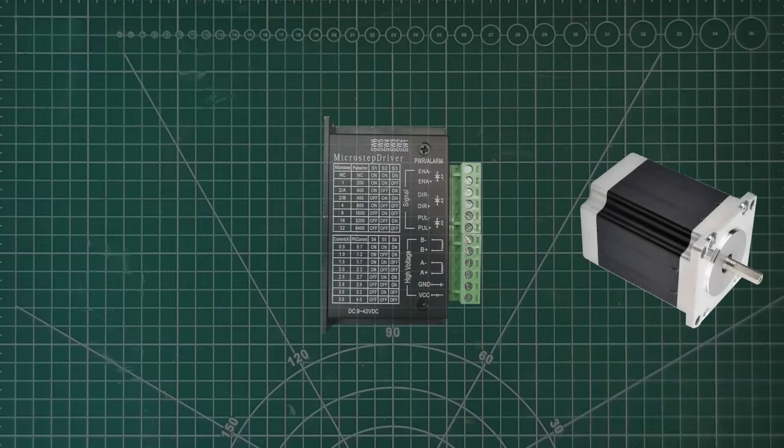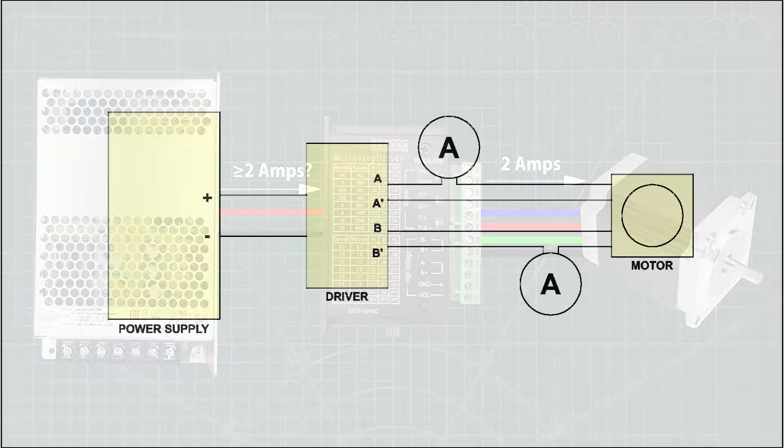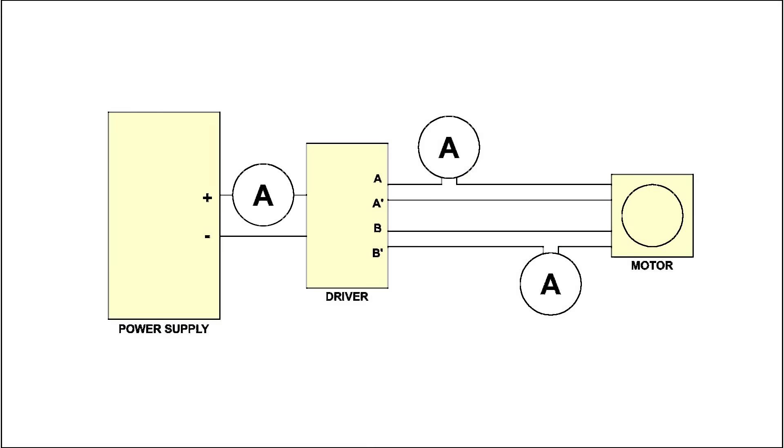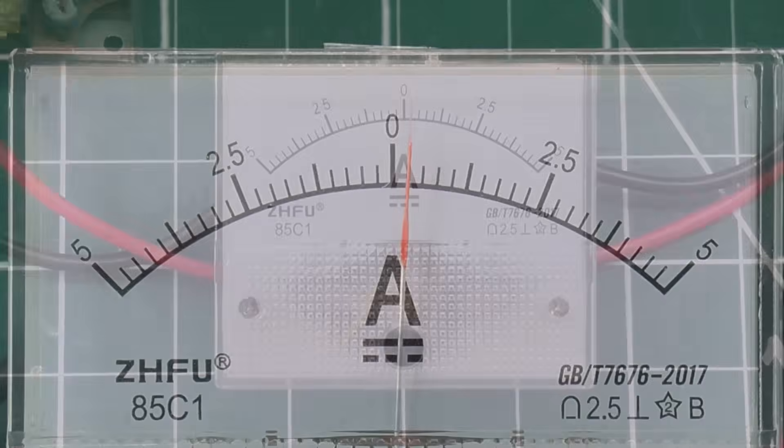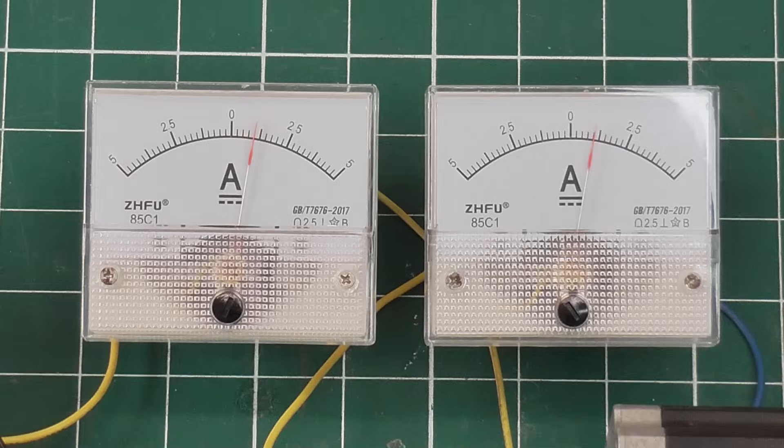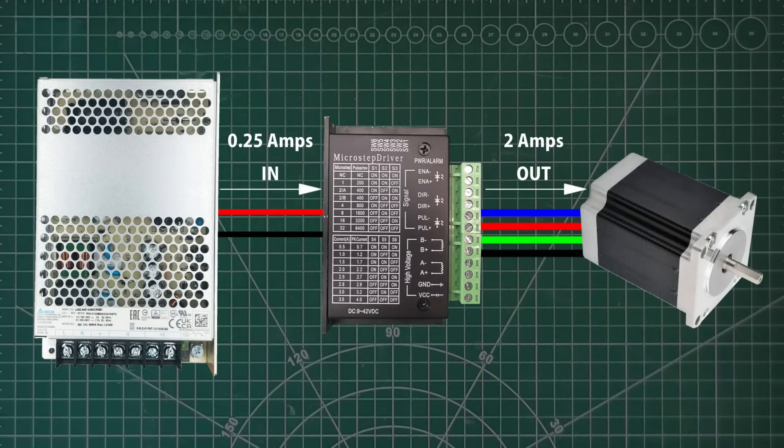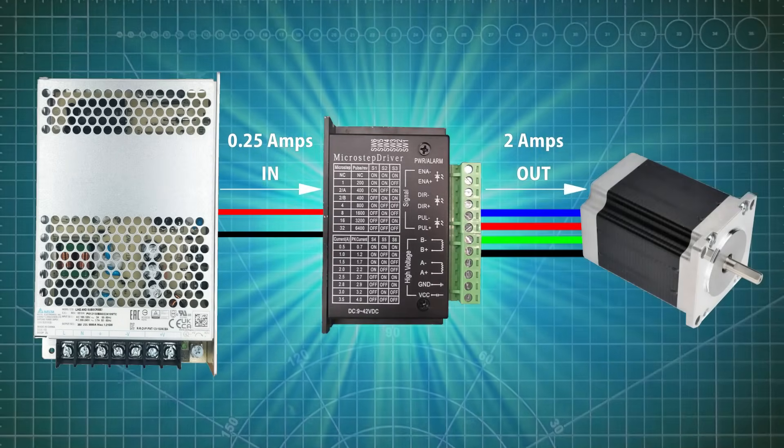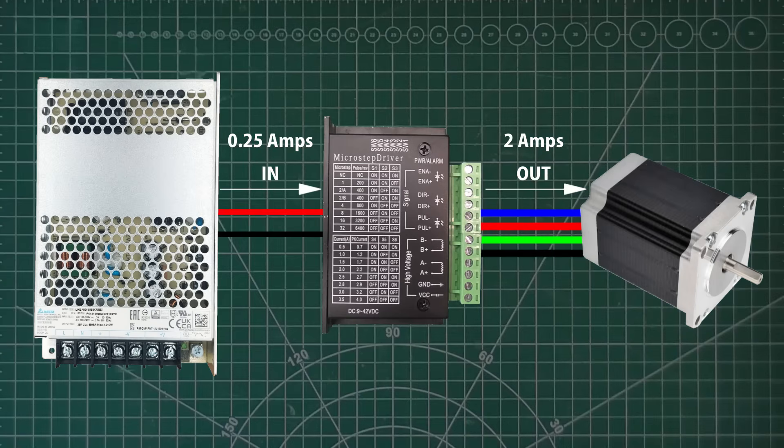So if the motor draws 2 amps from the driver, and the driver gets its power from the power supply, then surely the driver must draw at least 2 amps from the power supply, right? I'll put an ammeter here, and measure it. Just a quarter of an amp. And yes, I still have 2 amps over here. How is that possible? Is this some kind of magic free energy perpetual motion driver? Able to output 8 times the power it takes to run? No, of course not.